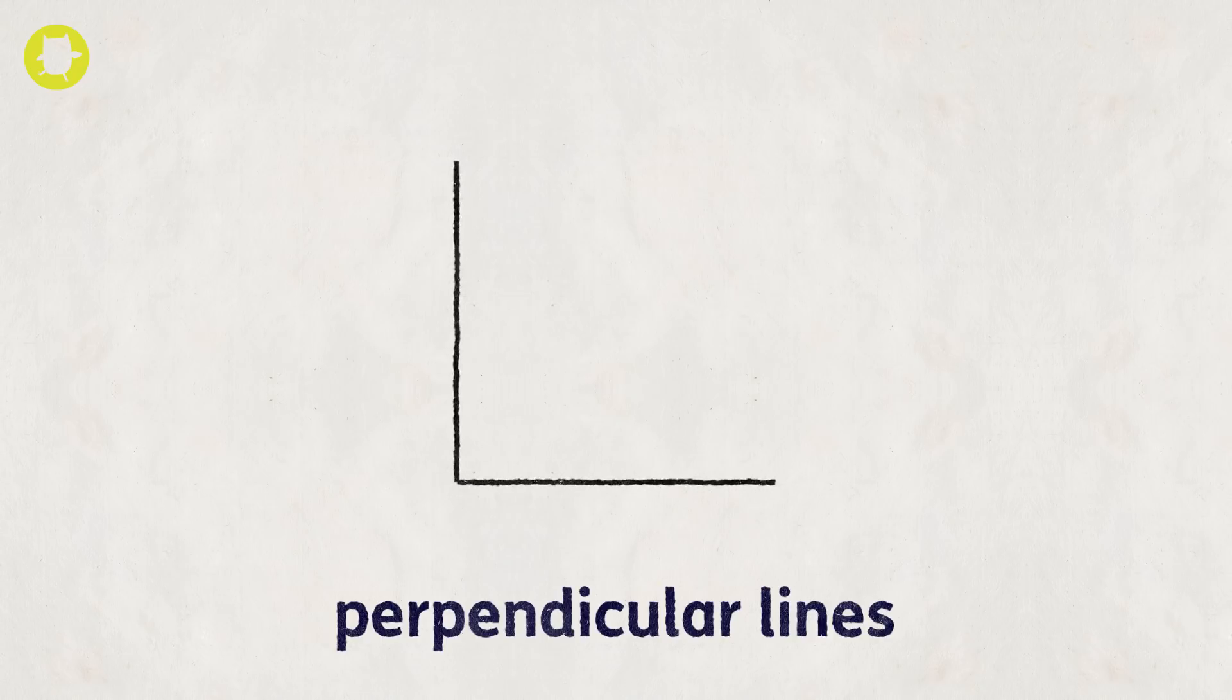Perpendicular lines are lines that meet at right angles. A right angle triangle has perpendicular lines.